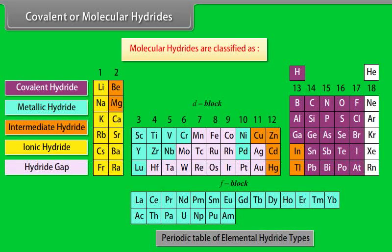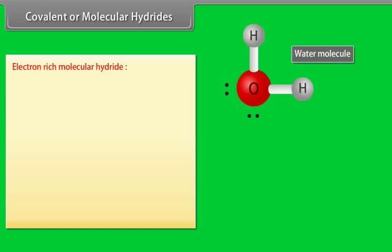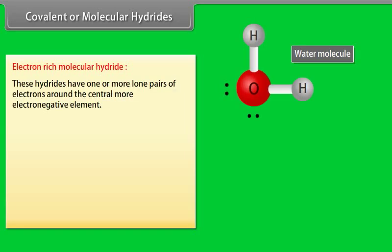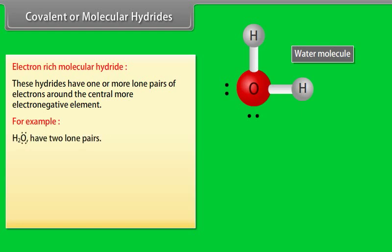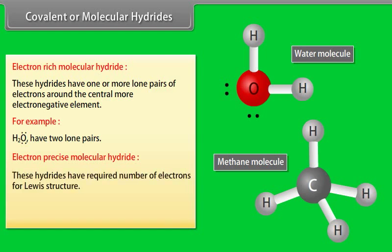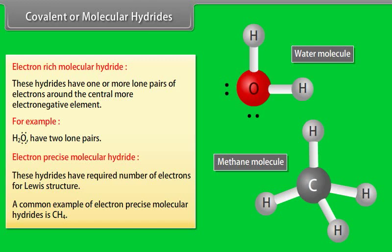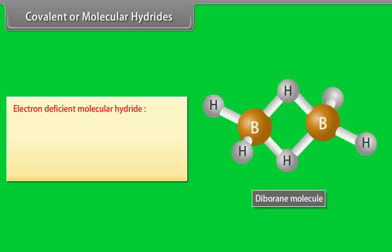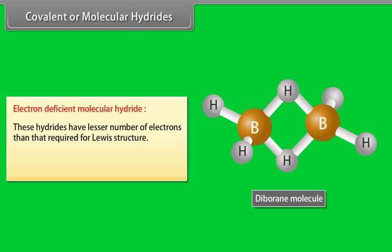Covalent or molecular hydrides are classified as: Electron-rich molecular hydride - these hydrides have one or more lone pairs of electrons around the central more electronegative element. For example, water has two lone pairs. Electron-precise molecular hydride - these hydrides have required number of electrons for Lewis structure. A common example is methane. Electron-deficient molecular hydride - these hydrides have lesser number of electrons than that required for Lewis structure. A common example is diborane.